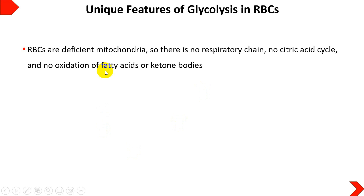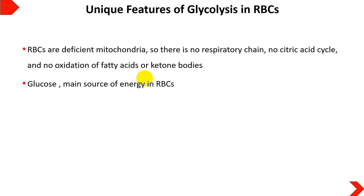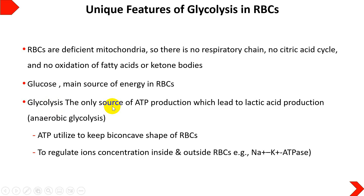Red blood cells are deficient in mitochondria, so there is no respiratory chain, no citric acid cycle, and no oxidation of fatty acids or ketone bodies. This means the whole energy source of red blood cells is glucose, and glycolysis is the only source of ATP production, leading to lactic acid production — also known as anaerobic glycolysis.